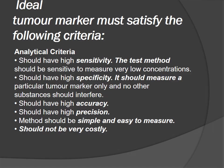An ideal tumor marker must satisfy the following analytical criteria: it should have high sensitivity — the test method should be sensitive enough to measure very low concentrations. It should have high specificity, measuring only a particular tumor marker with no interfering substances. It should have high accuracy, high precision, and the method should be simple, easy to use, and not very costly.